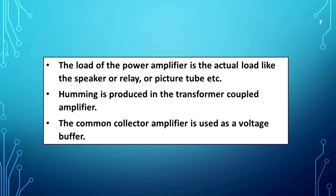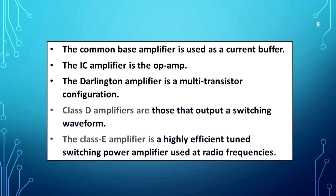Humming is produced in the transformer coupled amplifier. The common collector amplifier is used as a voltage buffer. The common base amplifier is used as a current buffer. The IC amplifier is the op-amp. The Darlington amplifier is a multi-transistor configuration.